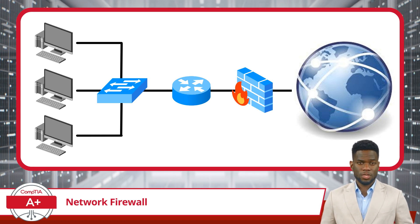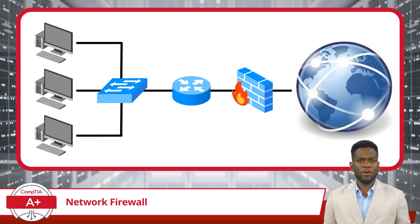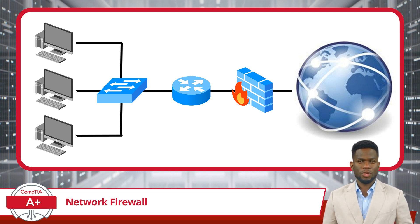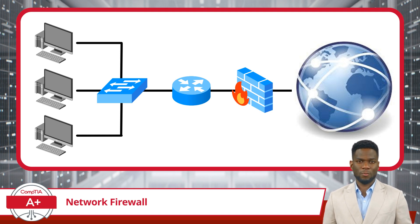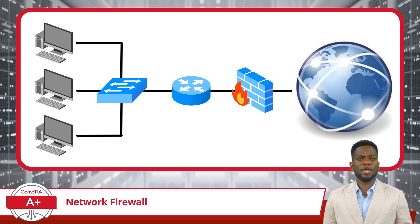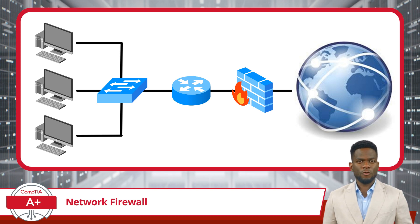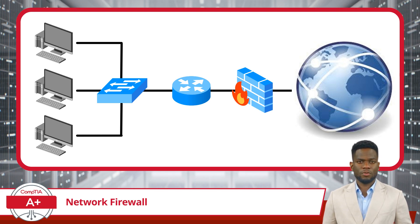Conversely, if a data packet is found to be in violation of any of the established security rules, the firewall blocks the offending packet from entering or exiting the network. By preventing these harmful data packets from penetrating or leaving the network, the firewall plays an integral role in maintaining the overall security and integrity of the network infrastructure.